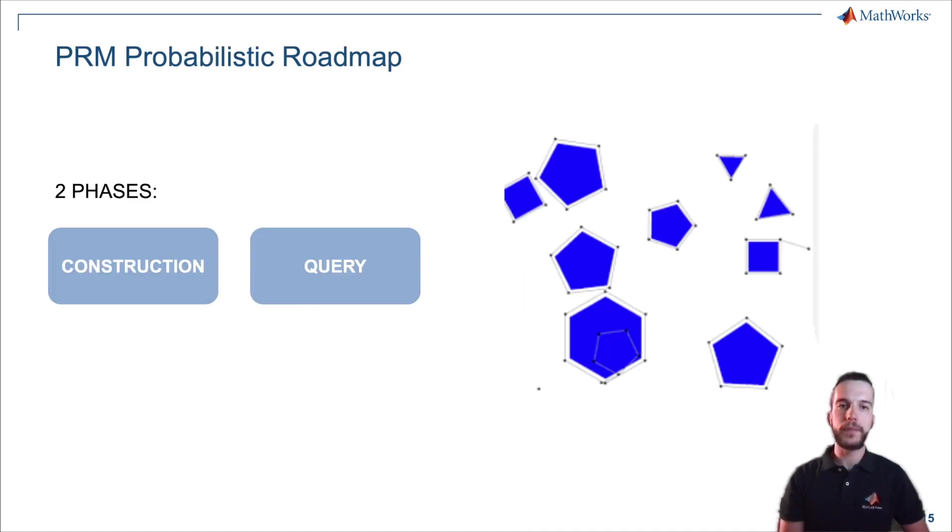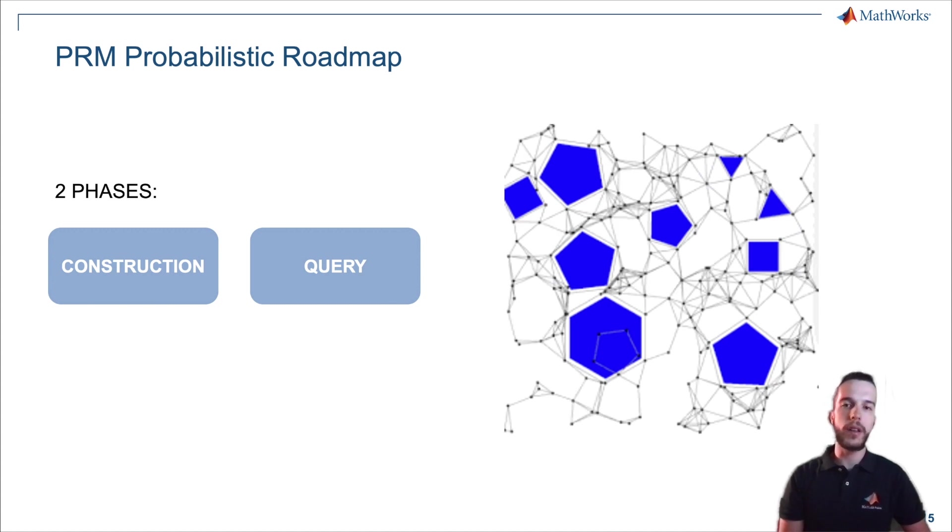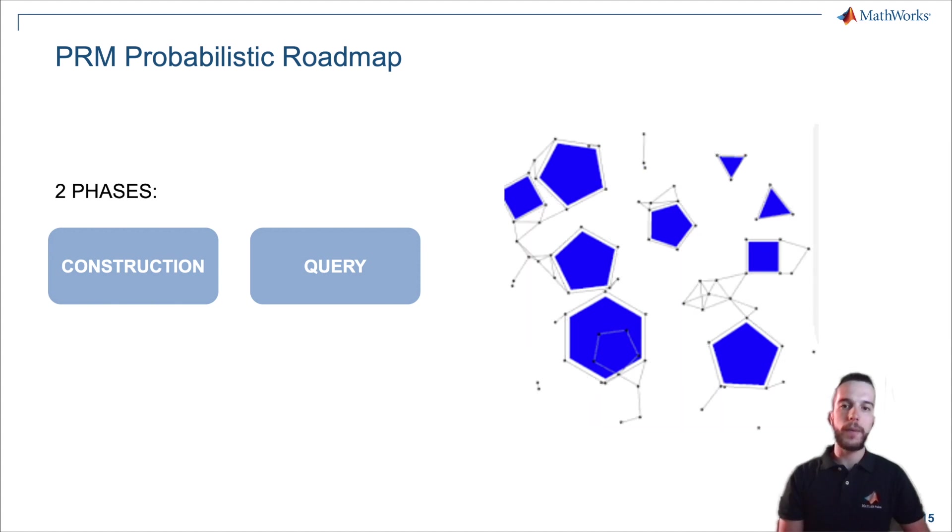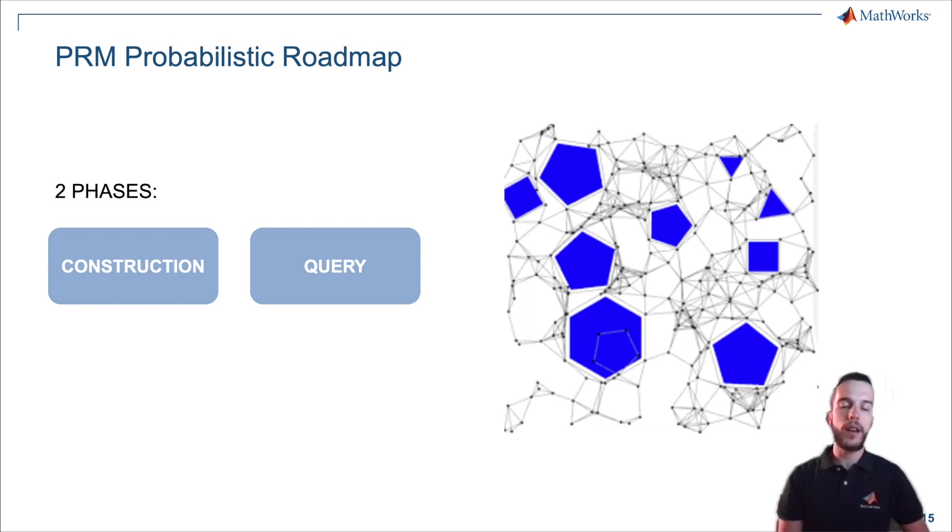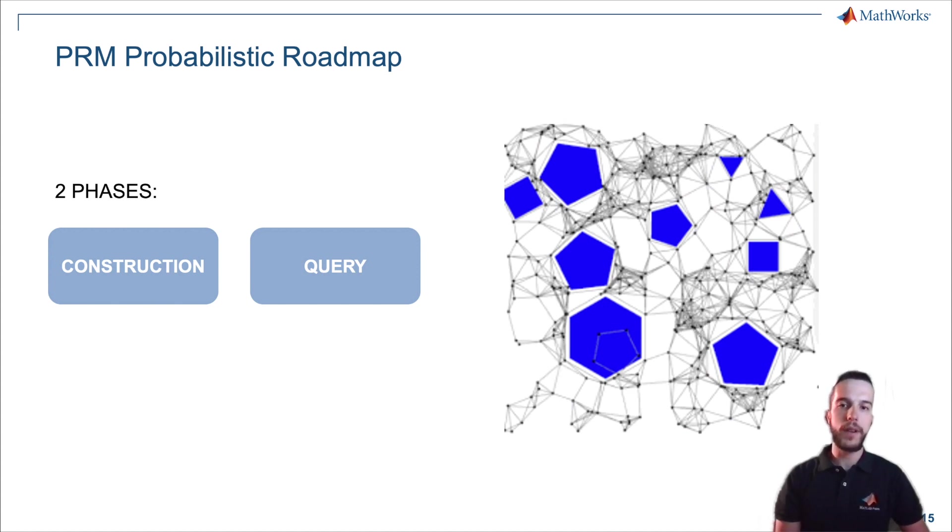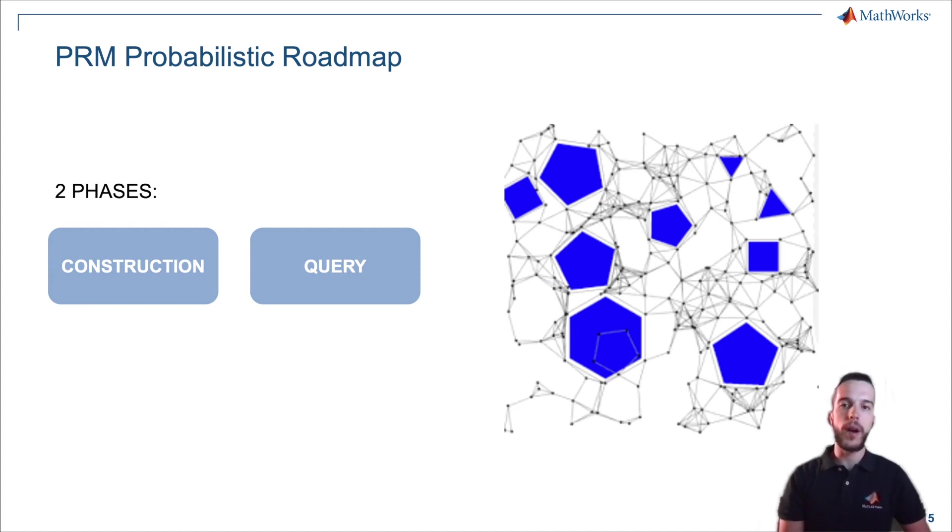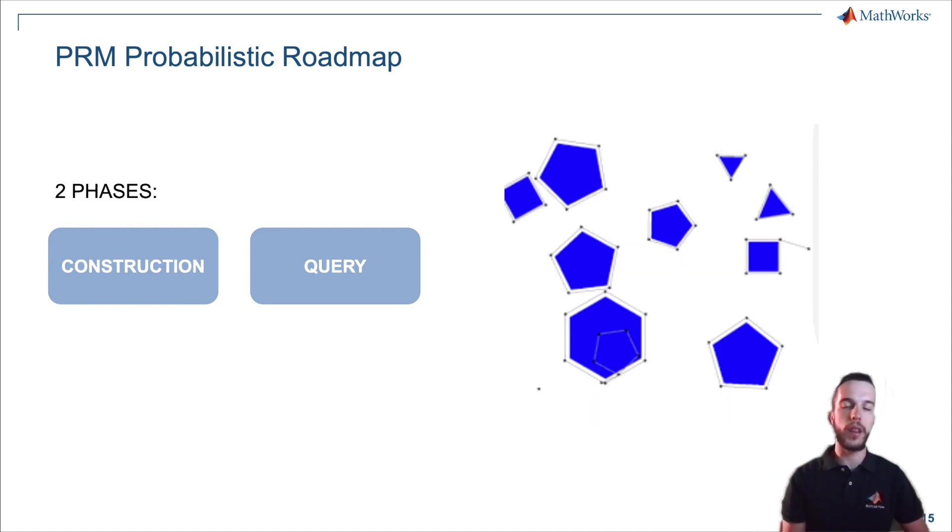Let's go more in detail with the description of a specific global planner algorithm, the PRM. PRM, probabilistic roadmaps, is mainly composed of two phases. The first is a construction phase, where as you can see in the image on the right side, we build up a graph that links different free positions inside the map. Second is the query, where we search for a specific path linking one point with another.